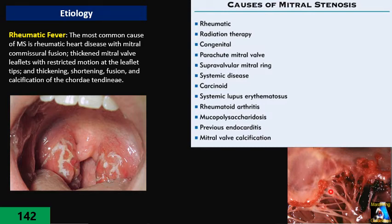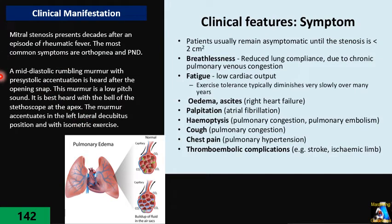Together with the fusion of the commissures, this ultimately causes mitral stenosis, which most of the time comes with mitral regurgitation as well. Mitral stenosis has a very long process — usually until the mitral valve orifice drops below two square centimeters, it does not cause any symptoms. But after that, with increasing left atrial pressure, pulmonary pressure rises and pulmonary congestion begins, causing pulmonary edema, and finally shortness of breath.